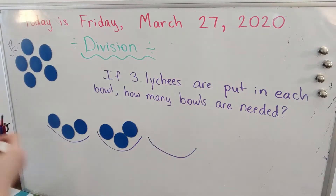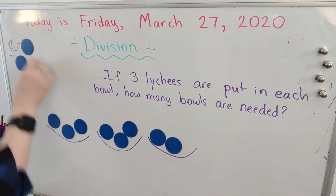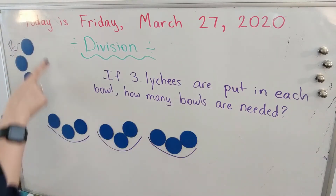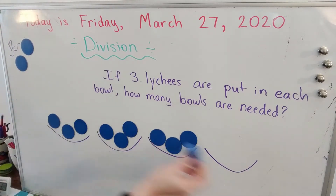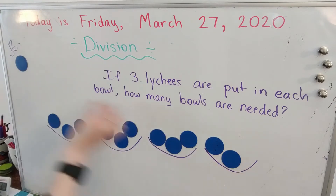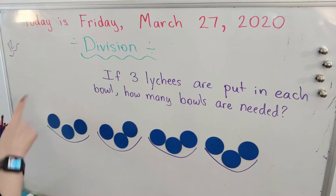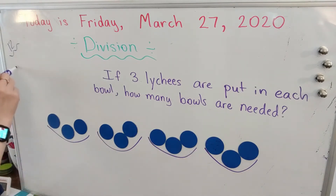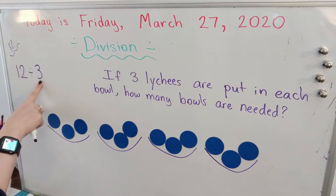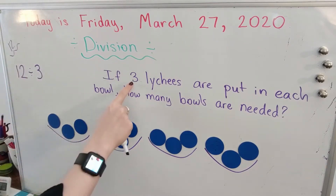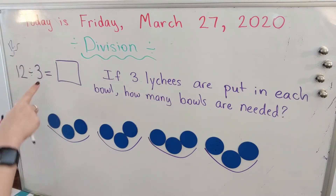So here is my third bowl, and I'm going to put another three leeches inside. And yet there are still more leeches. And here is my last bowl — I'm going to put three inside of that one too. Now there are no more leeches. So we knew there were 12 leeches. We started with the number 12. We divided them by the number we wanted in each group, which is three. And our answer tells us how many groups of three there are.